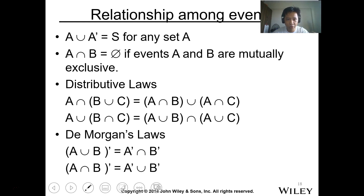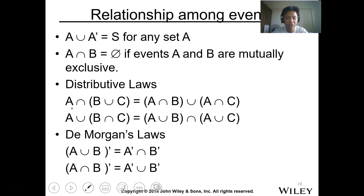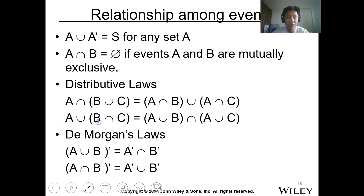By the distributive law, we apply the same principle as in algebra. If you have the union of B and C and get its intersection with A, this equals the union of the intersection of A and B and the intersection of A and C. Similarly, the union of A with the intersection of B and C equals the intersection of the union of A and B with the union of A and C.